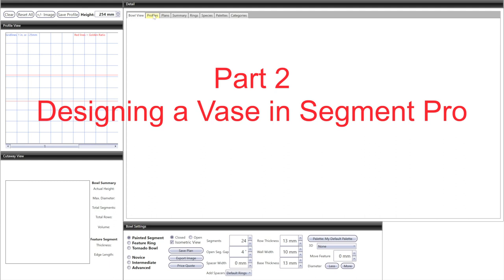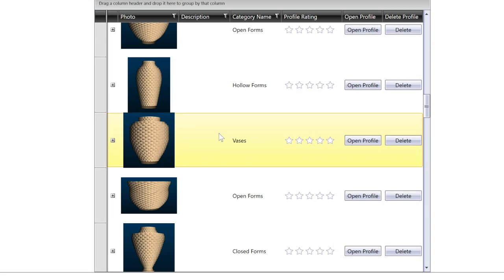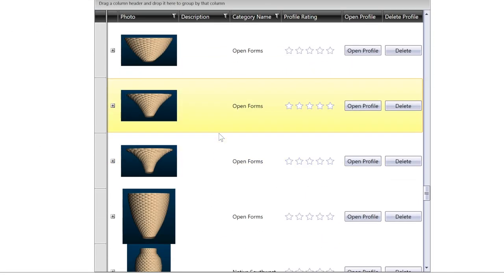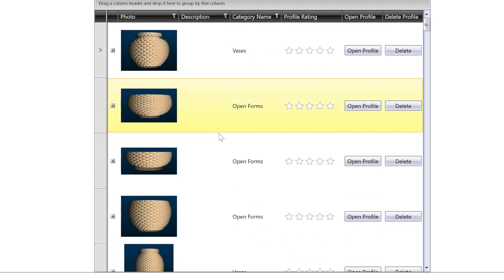So after you've launched Segment Pro, you'll see a few things here up at the top, so you've got bowl view, profiles, plans, summary, rings, species, palettes, and categories. If you go to the profiles one, it will show you a long list of lots of pre-designed vases and bowls that you can select from as a base for your bowl or vase.